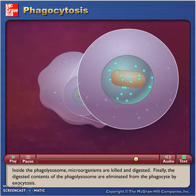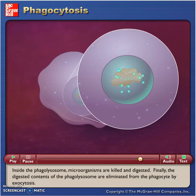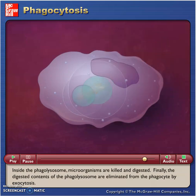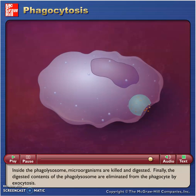Inside the phagolysosome, microorganisms are killed and digested. Finally, the digested contents of the phagolysosome are eliminated from the phagocyte by exocytosis.